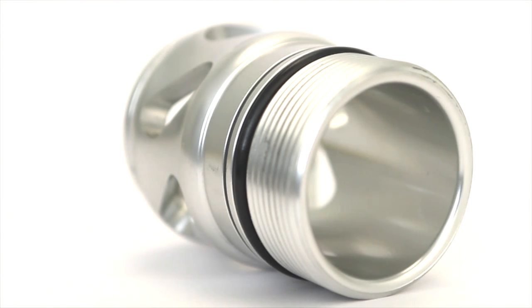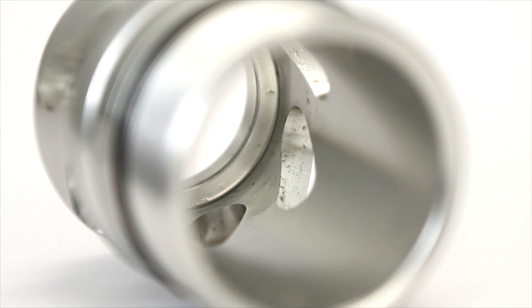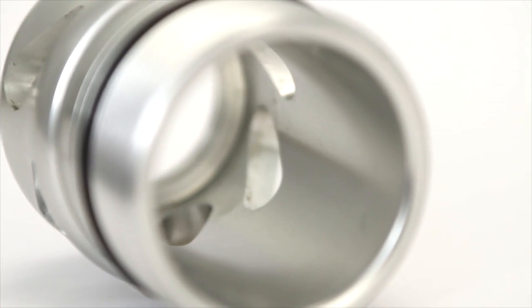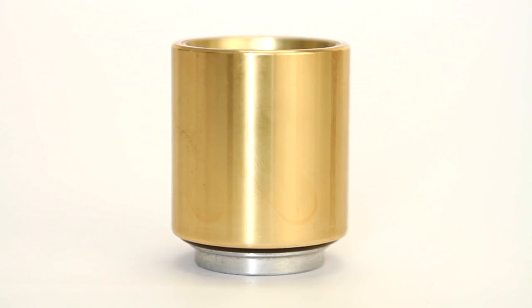Inspect the surface of the piston and the bore of the BOV for scoring or excessive wear. If there are any silver marks on the bore, it's a sign of excessive wear.